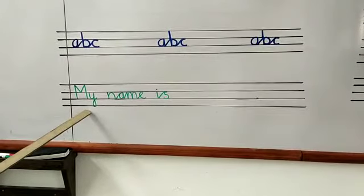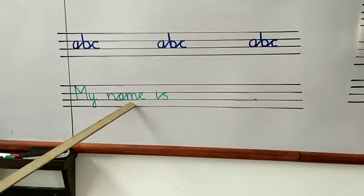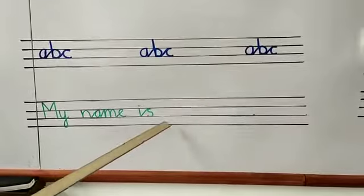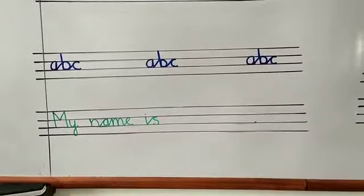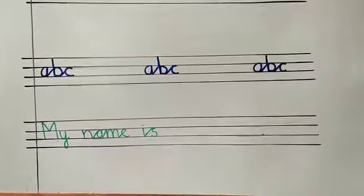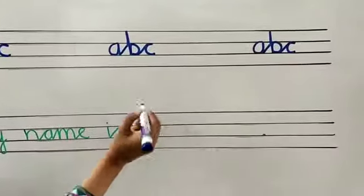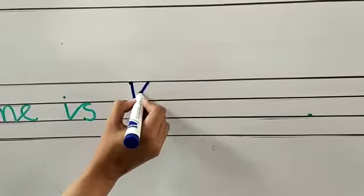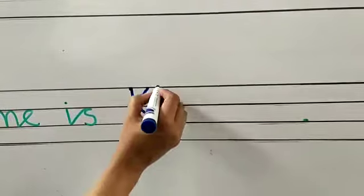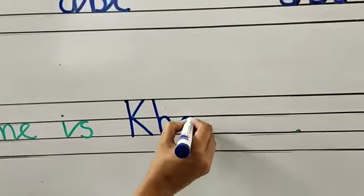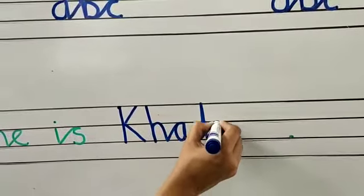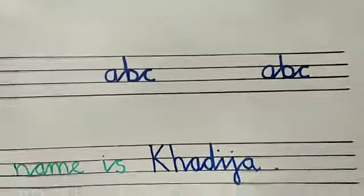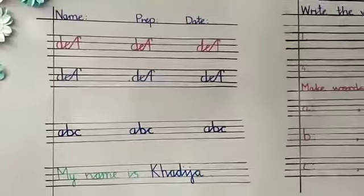M, Y — my. N, A, M, E — name. My name. I, S — is. My name is dash. You are going to write down your name here. I am writing my name and you will write your name. Name begins with a capital letter, so I am writing the first letter capital, in joining handwriting. My name is Padija.